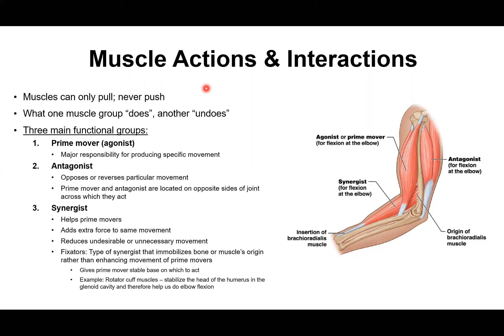We're going to talk about three main functional groups of muscles. The first functional group is the prime movers — some people use the term agonist, but I'm going to use prime mover because agonist is kind of deceptive. The prime mover is the muscle most responsible for producing a movement. In this example, we're talking about flexion at the elbow — a biceps curl motion — and the main muscle performing this action is the biceps muscle, so this is the prime mover.